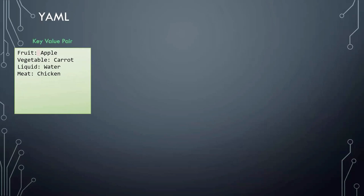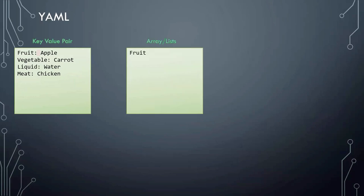Let's take a look at how an array is represented. We would like to list some fruits and vegetables. We would say fruits followed by a colon. On the next line, enter each item with a dash in the front. The dash indicates that it's an element of an array.